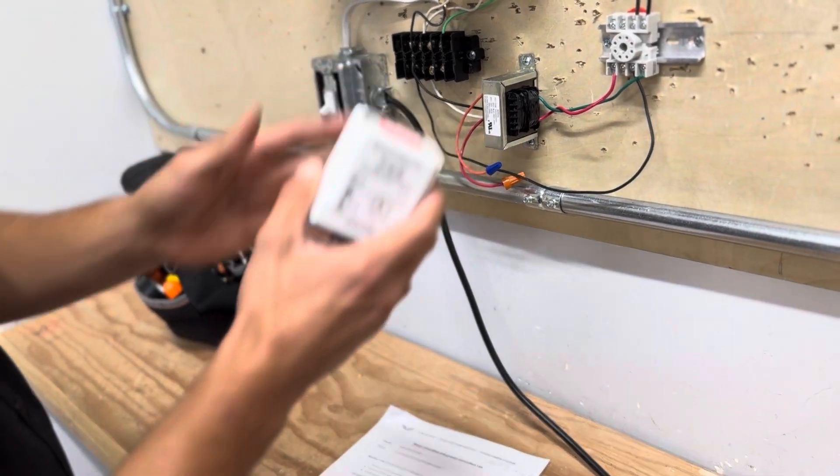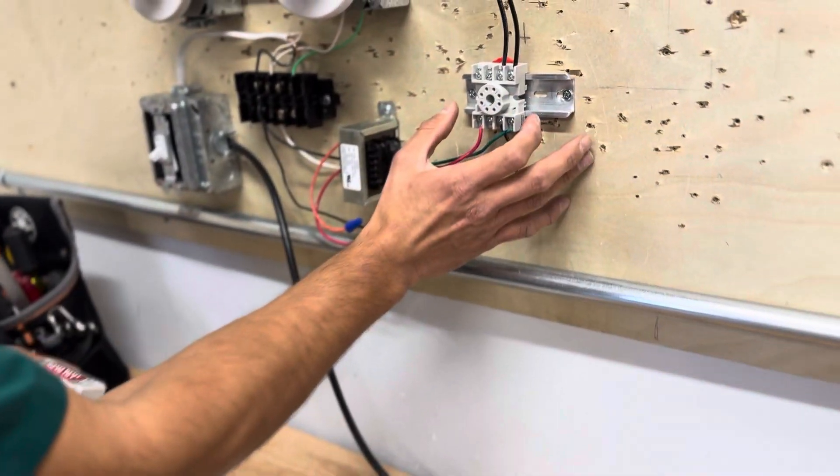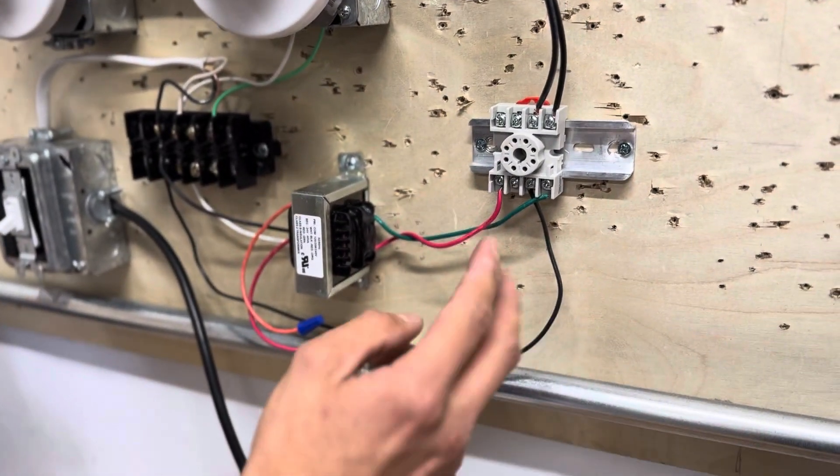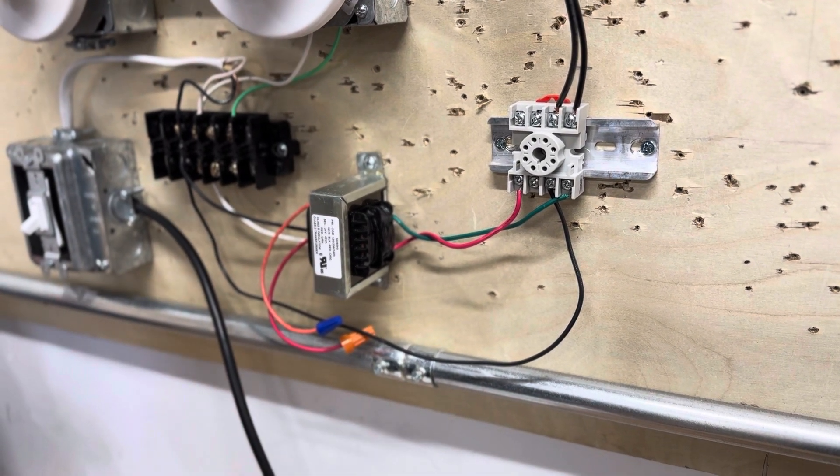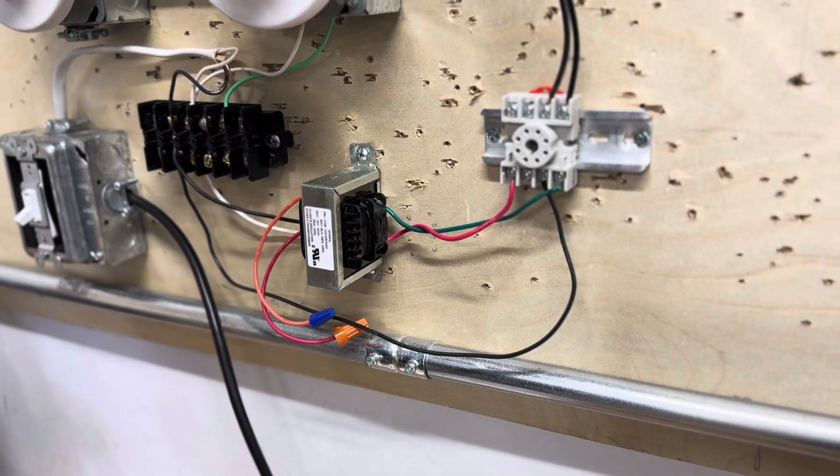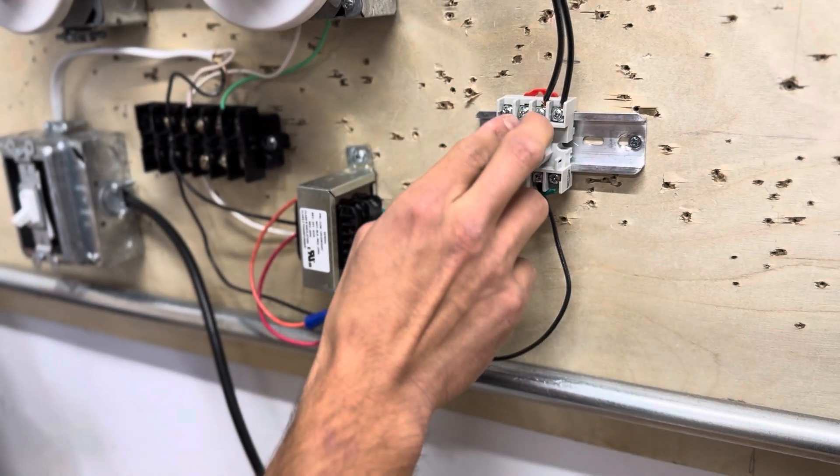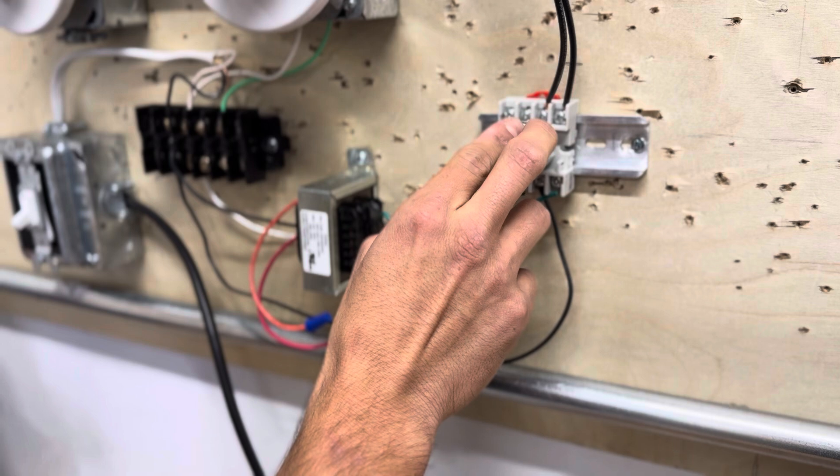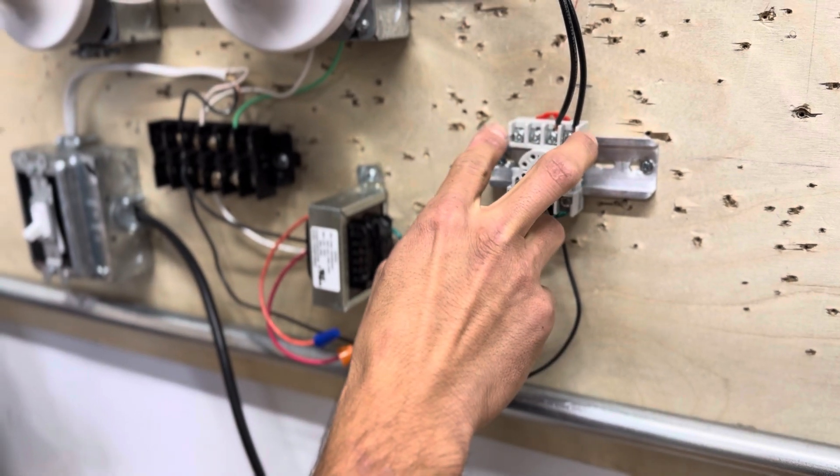So now let's go over the different pin outs here. This is your 8-pin base. Pins 2 and 7 are for the coil, and there are two sets of normally open and normally closed. Now the two in the middle up here are normally closed contacts. The two on the outer are normally open.